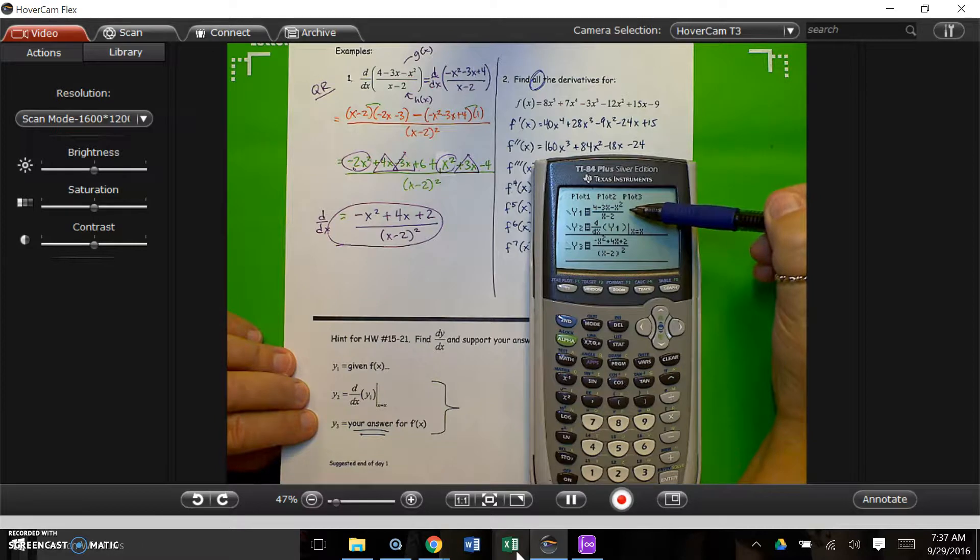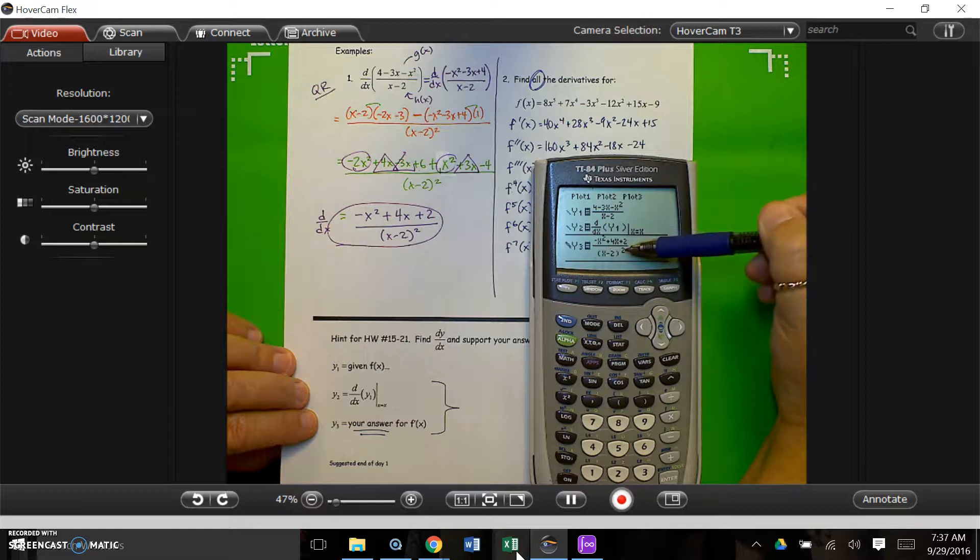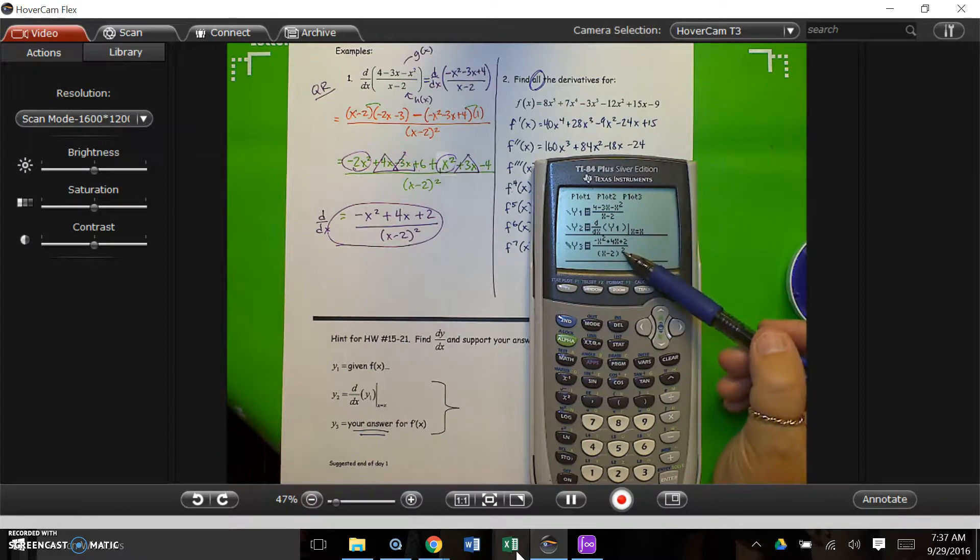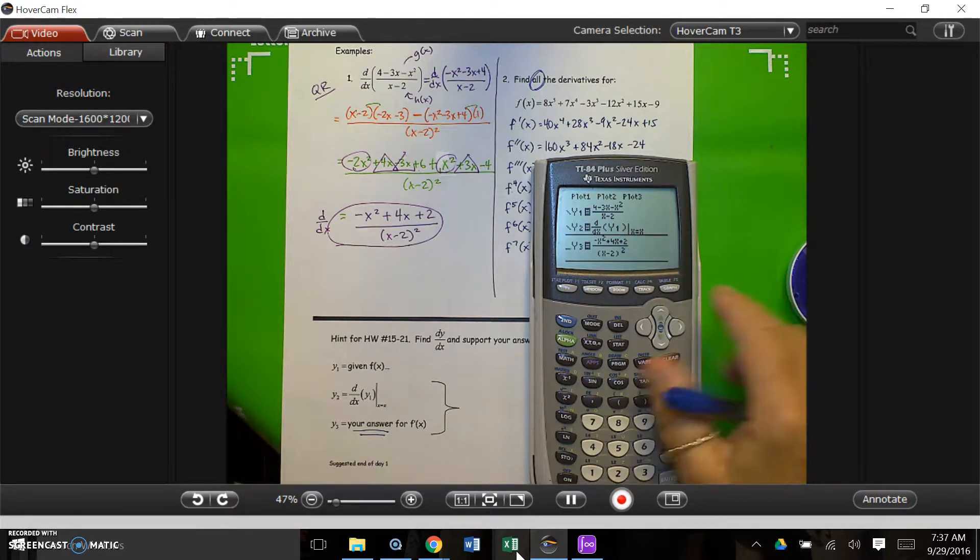If you watch it graph, it'll graph the y1 first, then it'll graph your derivative, and then it'll come back through and graph your answer for the derivative. So, if your answer for the derivative graphs right on top of the calculator derivative, then you know you got it right. So, let's watch this graph.